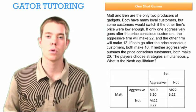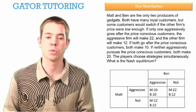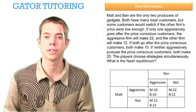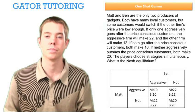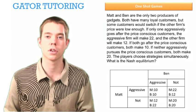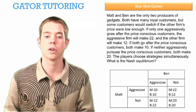This top left corner box is when both of them go after the price-conscious customers — they're both aggressive and they both make 10. This bottom right corner box is when neither of them go after the price-conscious customers and they both make $20 in this case.